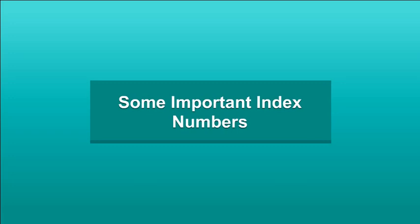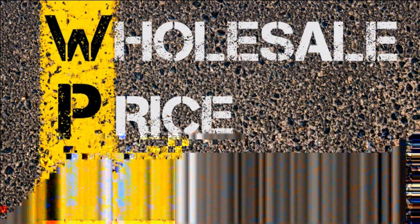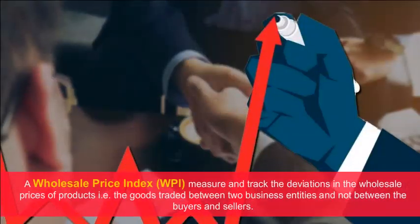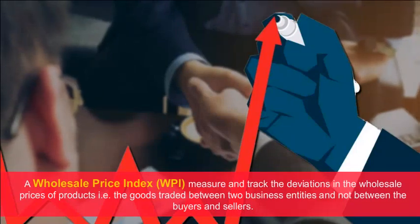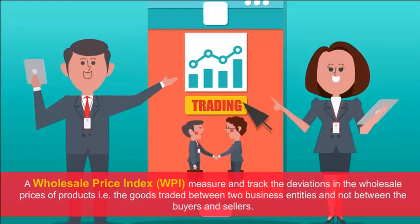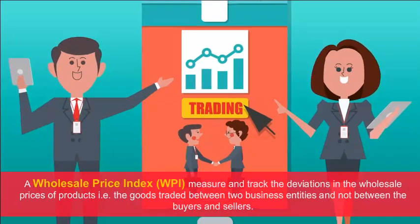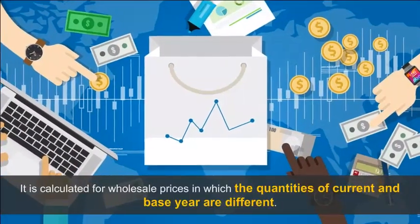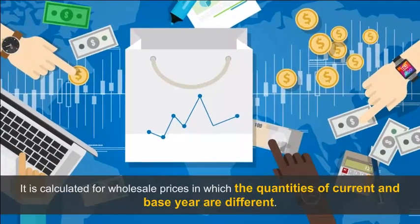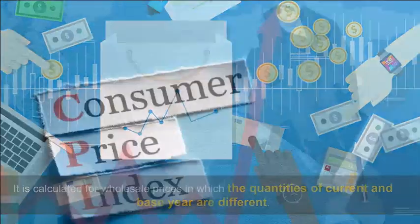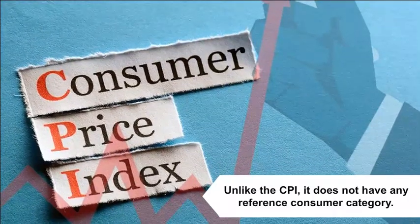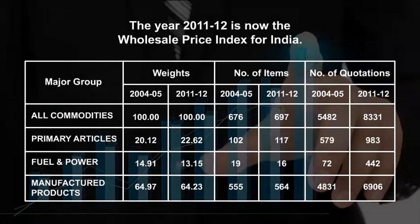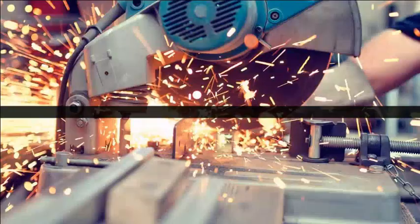Wholesale Price Index (WPI): The WPI measures and tracks the deviations in the wholesale prices of products — that is, goods traded between two business entities and not between buyers and sellers. It is calculated for wholesale prices in which the quantities of current and base year are different. Unlike the CPI, it does not have any reference consumer category. The year 2011-12 is now used as the base year for the Wholesale Price Index for India.